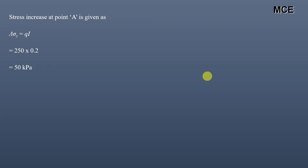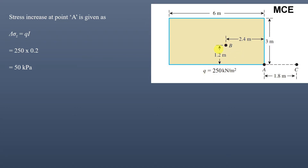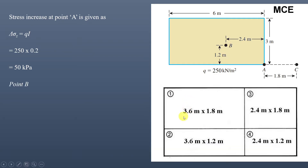The influence coefficient table is valid when the point is at the corner of a rectangle. So for point B, which is an interior point, we must make it a corner by dividing the large rectangular area into four smaller rectangles. The four rectangles are: (1) 3.6 m × 1.8 m, (2) 2.4 m × 1.8 m, (3) 3.6 m × 1.2 m, and (4) 2.4 m × 1.2 m.